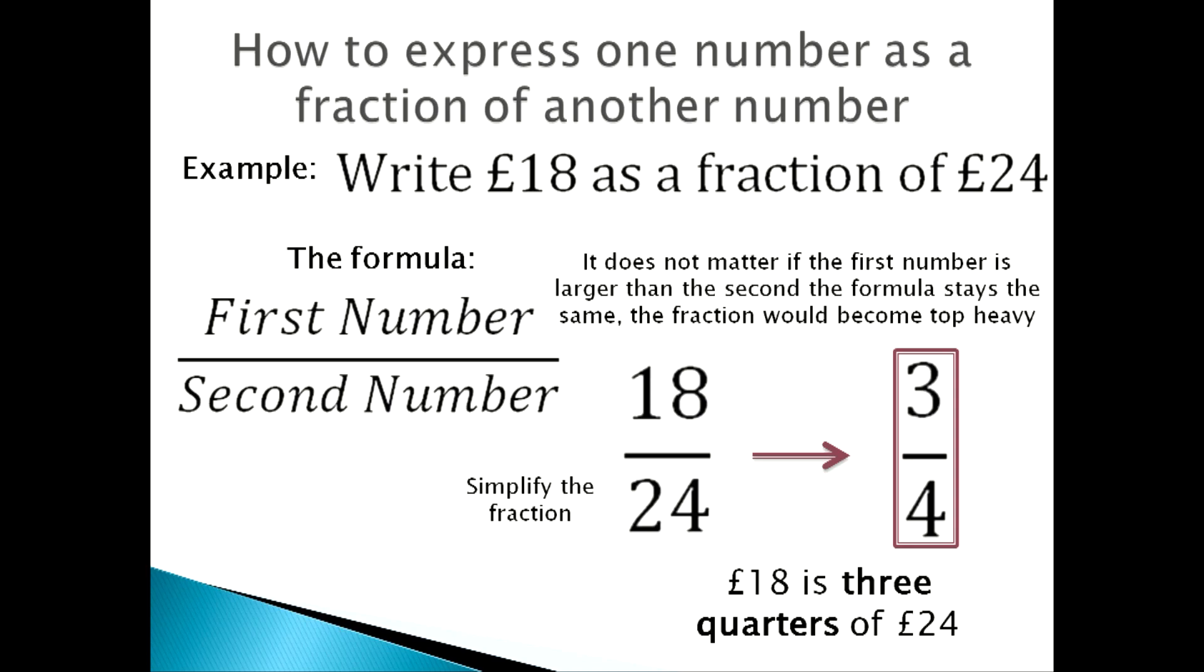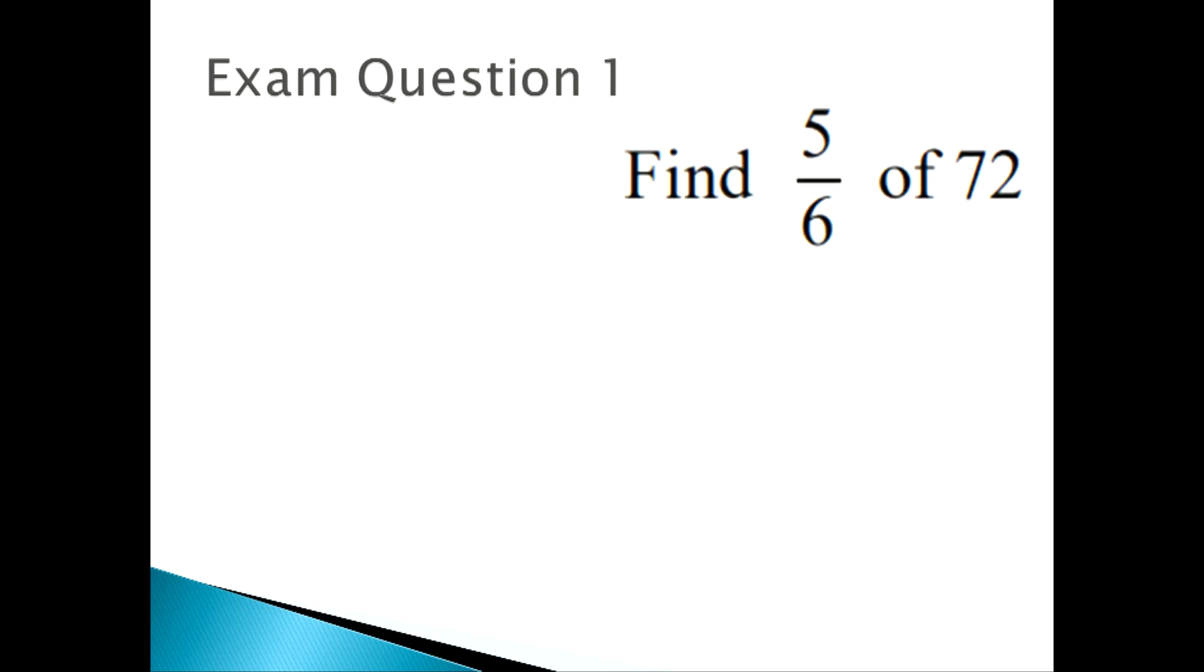Now we're going to look at the first exam question: Find 5 sixths of 72. First, you divide the amount given in the question by the denominator, so that would be 72 divided by 6, and that is 12.